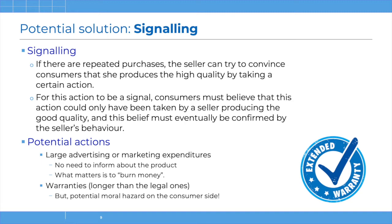One such mechanism is signaling. Think of a situation of repeated purchases, where buyers can buy repeatedly from the seller. In that situation it may be possible for the seller to convince consumers that she actually produces the high quality. She needs to take a certain action which is costly enough that consumers will understand only a producer of high quality would find it profitable to make such a costly action. Conversely, a producer of low quality would not find it profitable to make such an action.